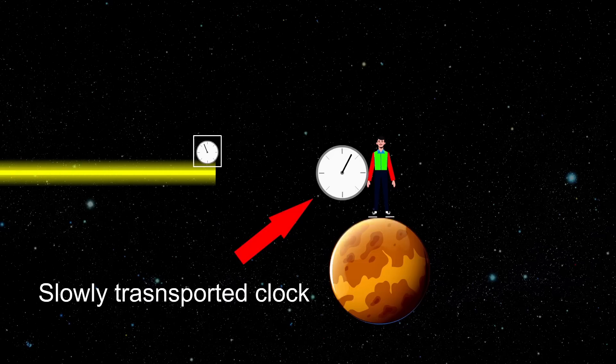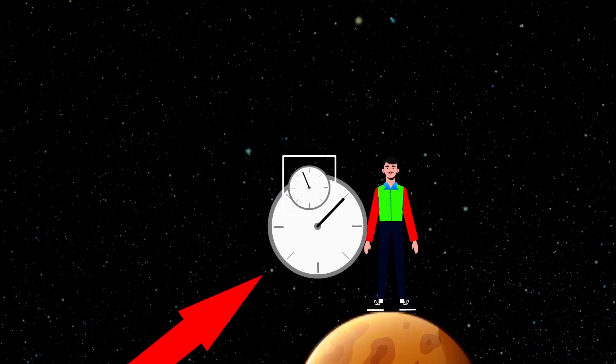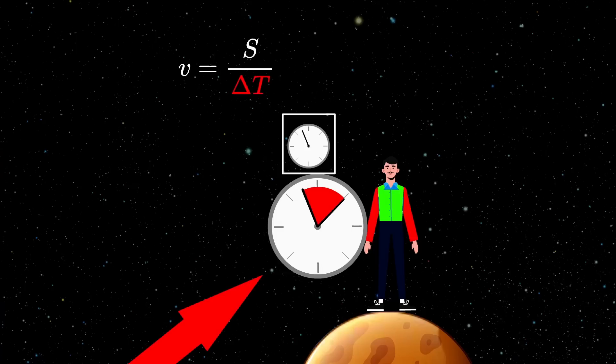So it feels like we have done it. By slow transport, we can make any two clocks synchronized to arbitrary precision. And now we can compare it to a light pulse synchronization that depends on the anisotropy of the speed of light. So we can pick such a speed of light that fits the slow transport synchronization. And if you do it, you will find out that the classical isotropic speed of light will do the job.